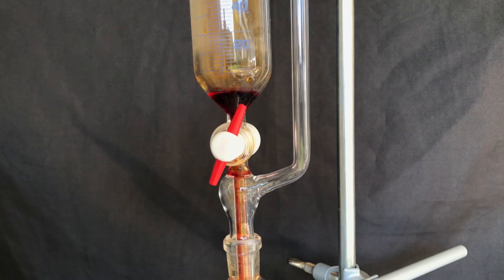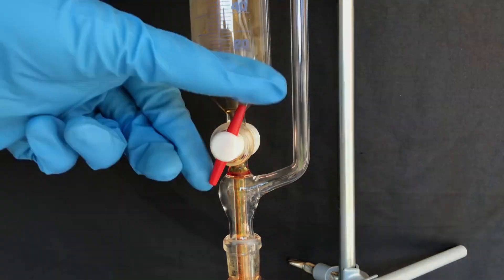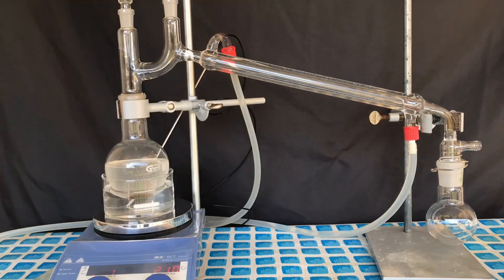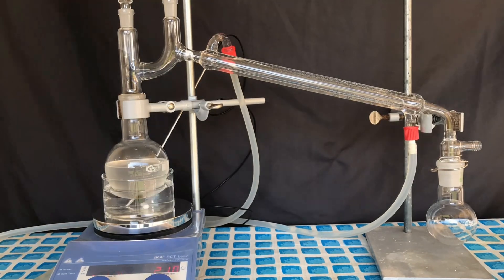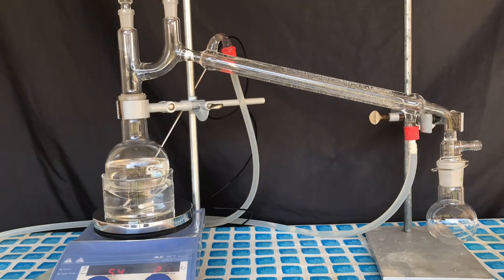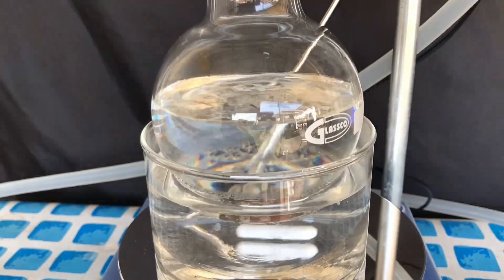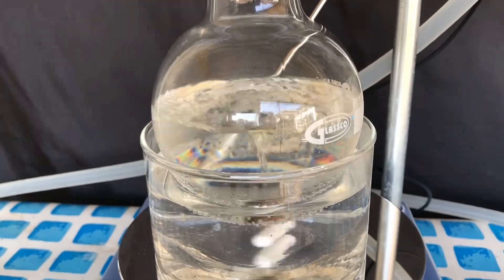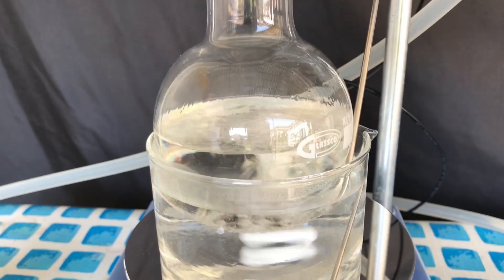At some point all the bromine had been added, we switched off the addition funnel and we set up a simple distillation to recover the dichloromethane. It would also be possible to just boil off the dichloromethane in an open beaker, but I wanted to recover it because you don't have to waste reagents, especially ones that are so easy to recycle.